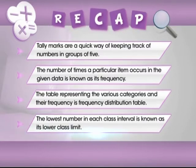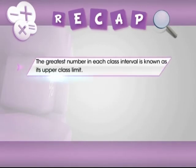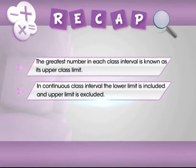The lowest number in each class interval is known as its lower class limit. The greatest number in each class interval is known as its upper class limit. When the lower limit is included and upper limit is excluded in an interval, it is known as a continuous class interval.